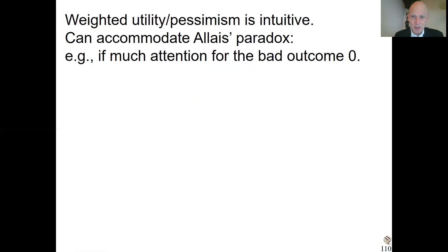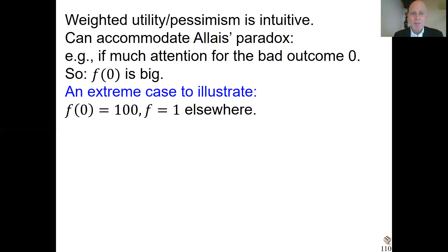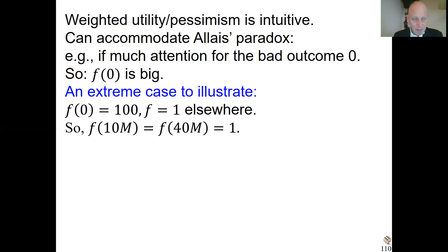Weighted utility can accommodate the Allais Paradox by assigning much weight to the bad outcome zero — so that f of zero is very big, and for the other things it's not so big. I do an extreme case to illustrate. Imagine that f is 100 at zero and it is 1 everywhere else. We only talk about gains, to keep it simple. The outcomes 10 million and 40 million that appear in the Allais Paradox just have weight one. Only the zero outcome gets the extra weight. This is a very extreme, simplistic case to illustrate how it works.